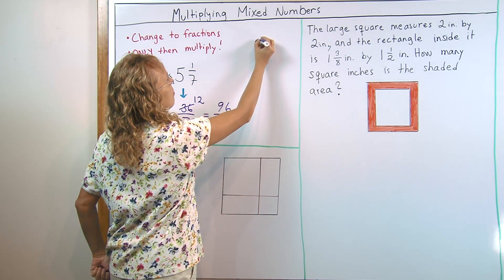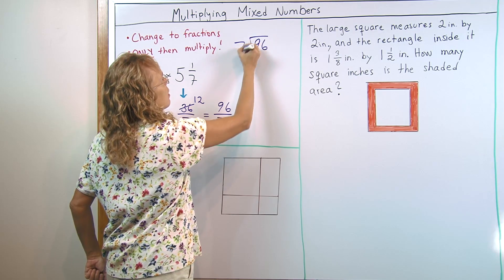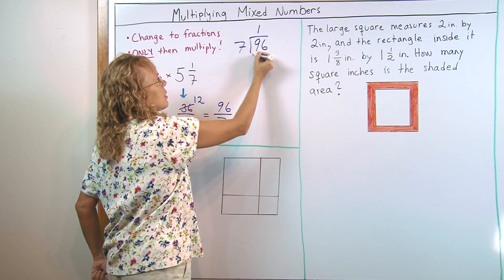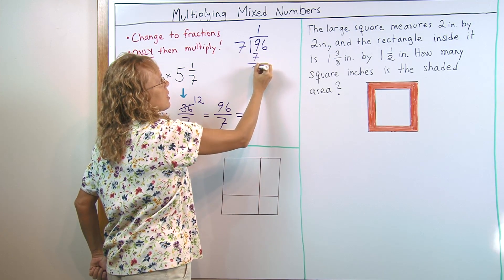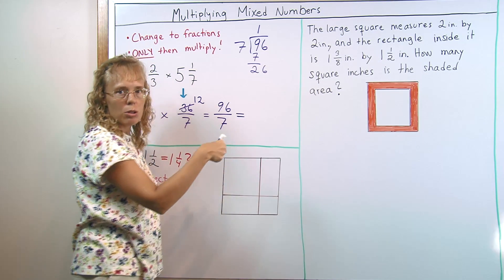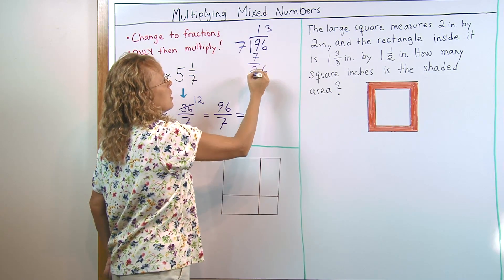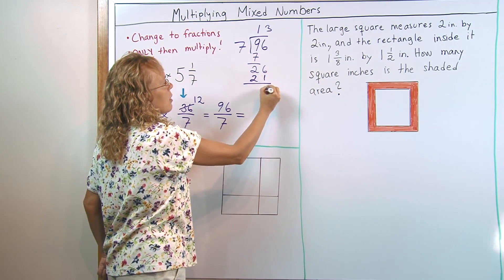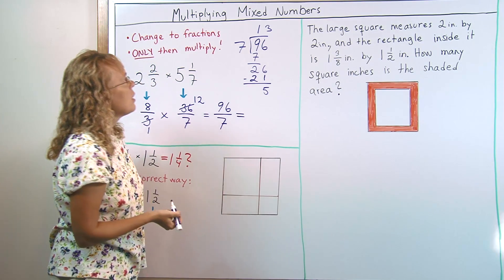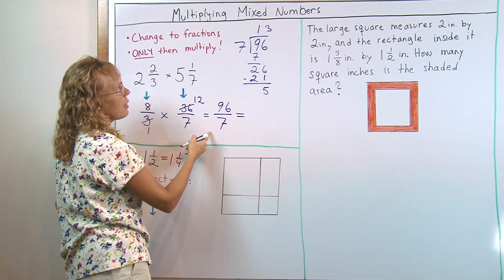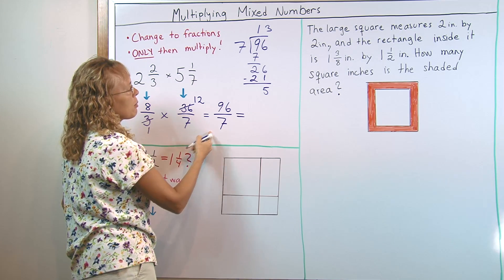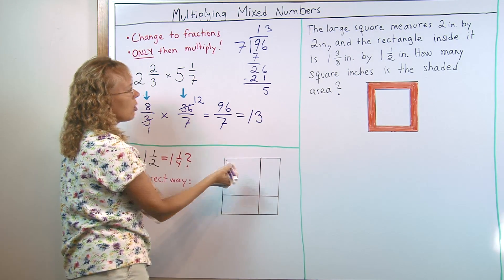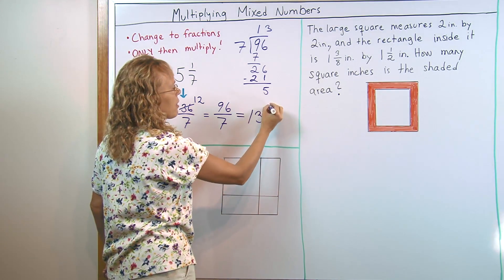7 goes to 9 once. 1 times 7 is 7. Subtract 26. 7 goes to 26, 3 times 21, 1. Subtract 5 is our remainder. So as a mixed number then, we will have 13, 13 whole pies and then 5 sevenths.